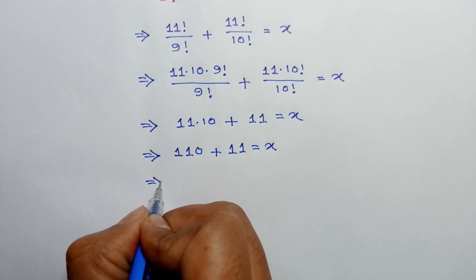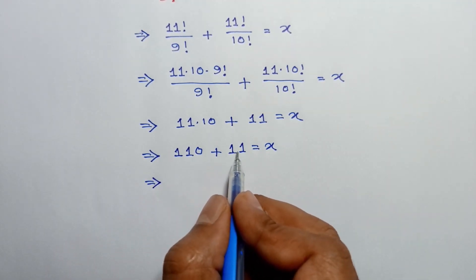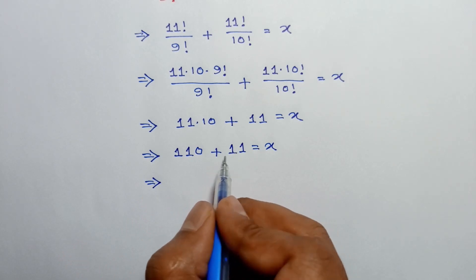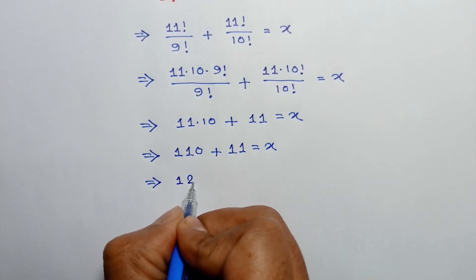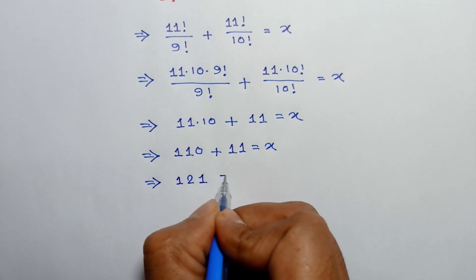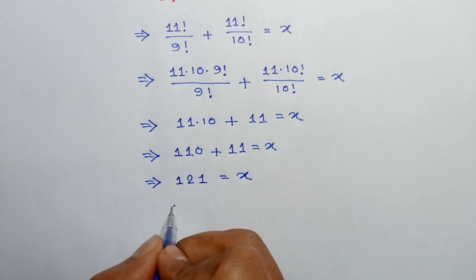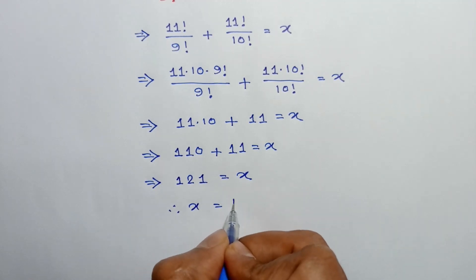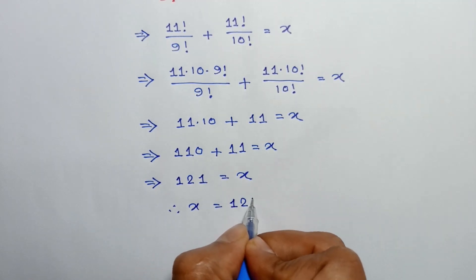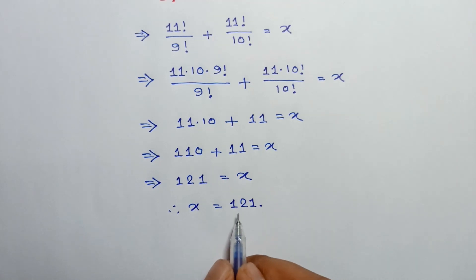So, 110 plus 11 is 121, which is equal to x. So the value of x is equal to 121. This is the value of x.